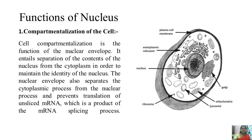Coming to the functions of the nucleus. The first function is compartmentalization of the cell. The cell compartmentalization is the function of the nuclear envelope. It entails the separation of the contents of the nucleus from the cytoplasm in order to maintain the identity of the nucleus. The nuclear envelope also separates cytoplasmic processes from nuclear processes and prevents the translation of unspliced mRNA, which is the product of the mRNA splicing process inside the nucleus.